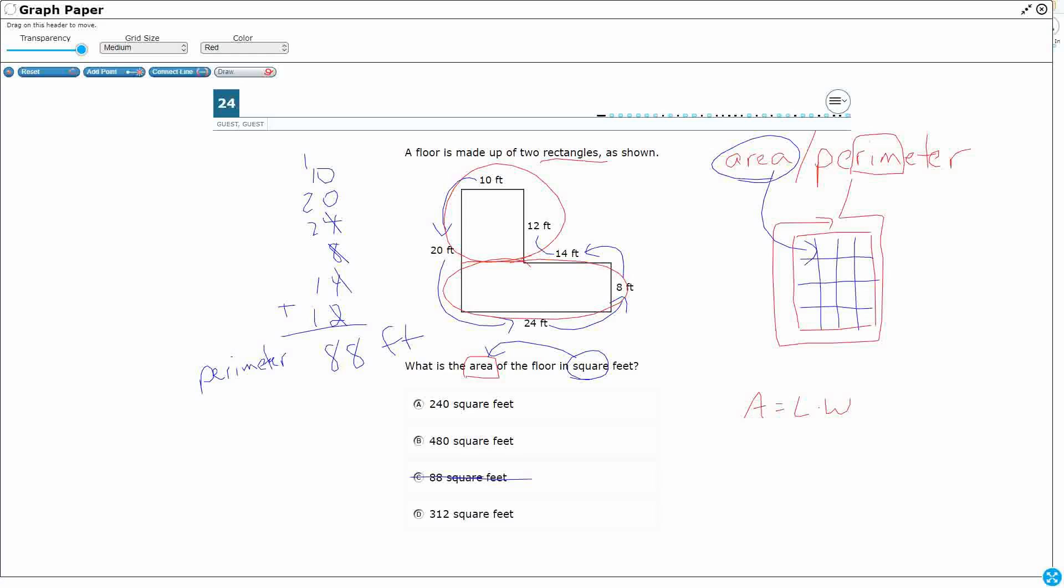Okay so length times width. I can use this 12 and I can use this 10, so I can say 10 times 12. Length times width, that's going to get me a pretty simple 120 square feet. And then I've got this one. Now I need to find the height. Right there is 8.